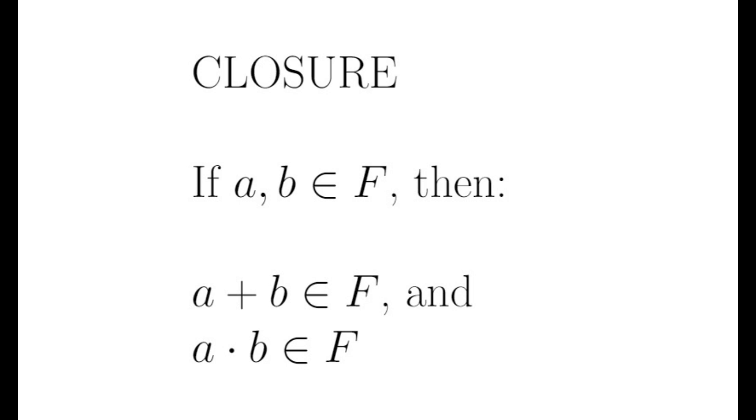We call these properties the field axioms and there are many, but first I'd like to talk about closure. Closure is an important property every field must have. If I take any two elements of F, say A and B, and I add them together, then their sum is also in F. Likewise if I multiply them together, then their product also lies in F.